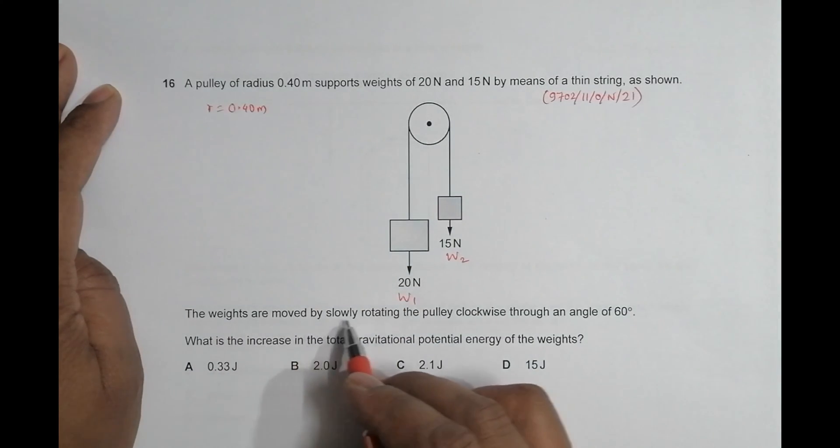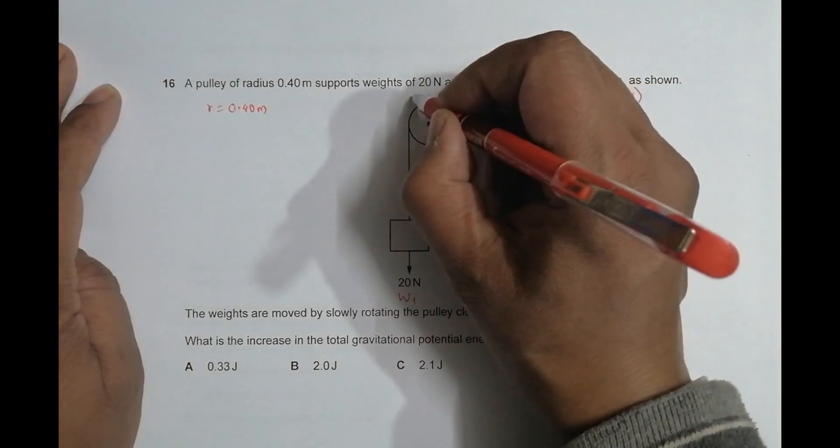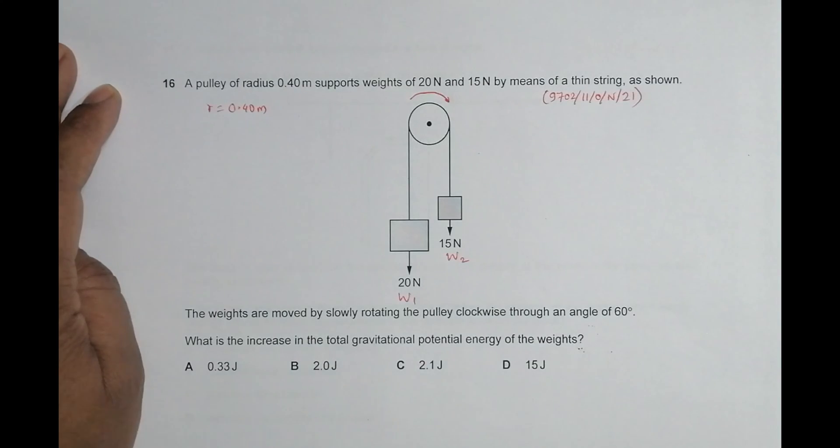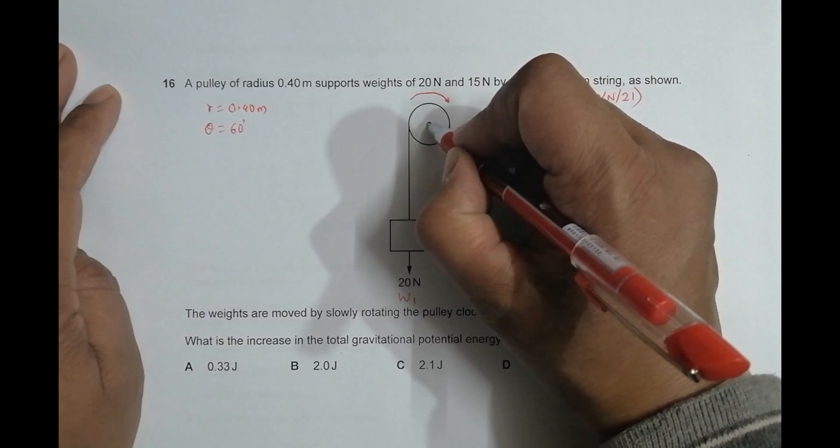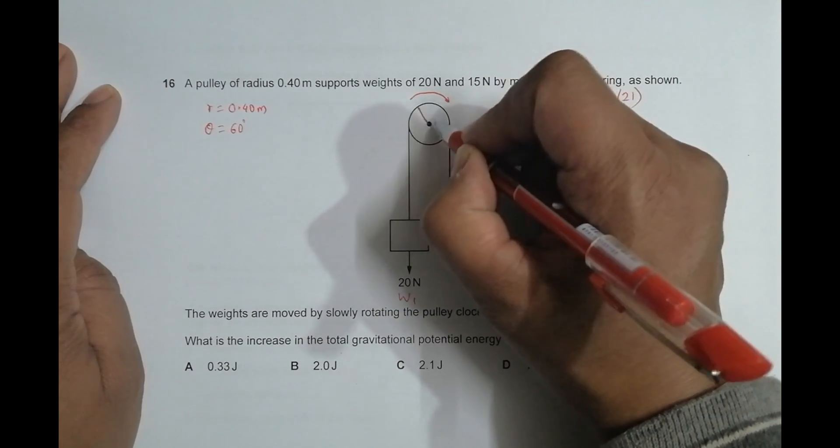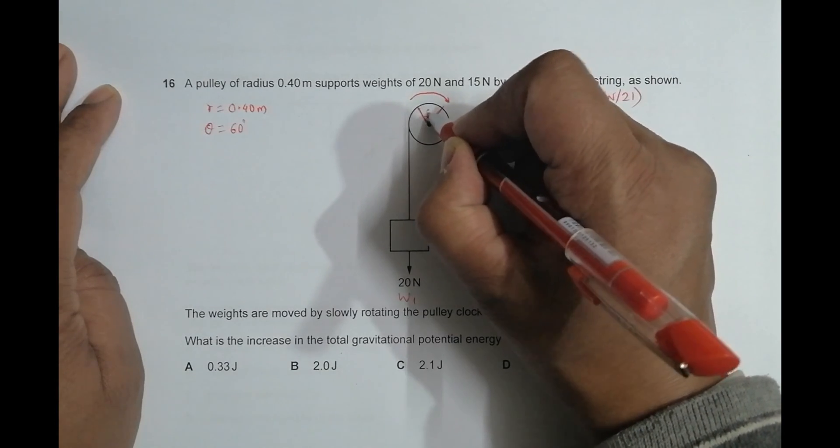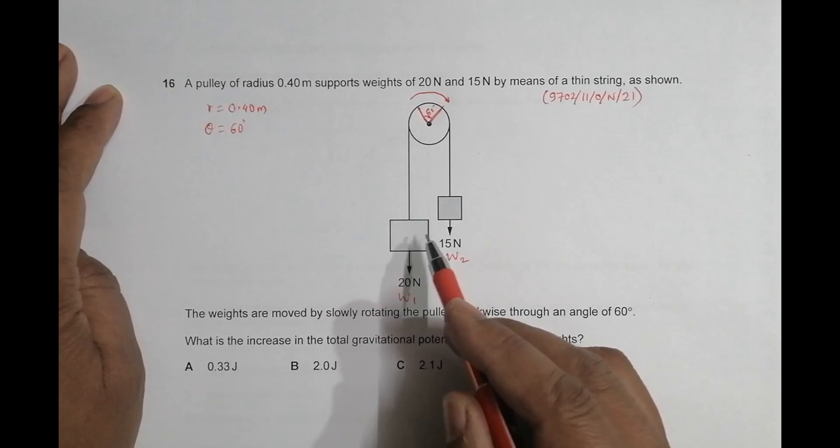The weights are moved slowly by rotating the pulley clockwise through an angle of 60 degrees. So we rotate it clockwise by a certain angle which is 60 degrees, so theta is equal to 60 degrees. If a certain mark is like this, this mark goes like this and this angle becomes 60 degrees. What is the increase in the total gravitational potential energy of the weights? So we have to find the increase in gravitational potential energy.